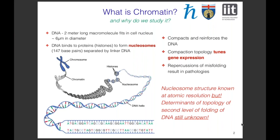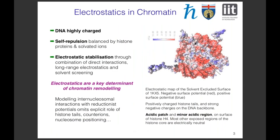So why do we study chromatin? The nucleosome structure is known at atomic resolution, but the determinants of the topology of the second level of DNA folding are still unknown. Electrostatics is a key determinant of chromatin remodeling — mainly because the DNA fiber is very highly charged due to the phosphate atoms found in the DNA backbone.